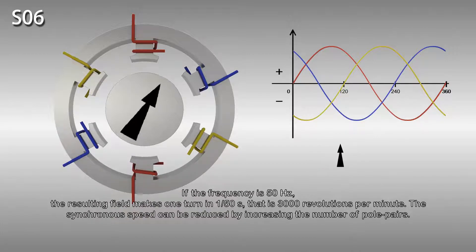If the frequency is 50 hertz, the resulting field makes one turn in one 50th of a second, that is 3000 revolutions per minute. The synchronous speed can be reduced by increasing the number of pole pairs.